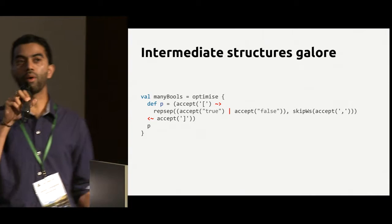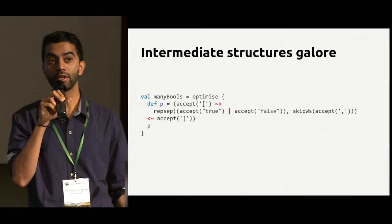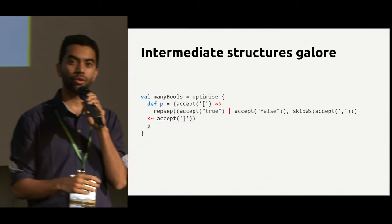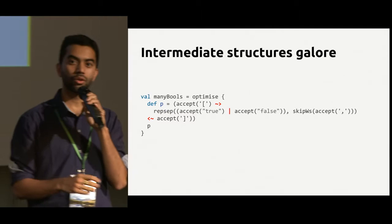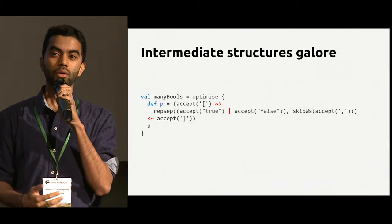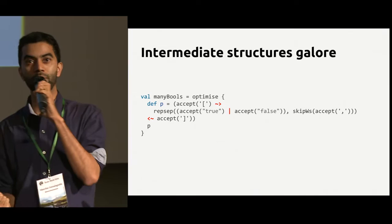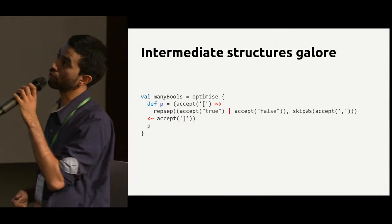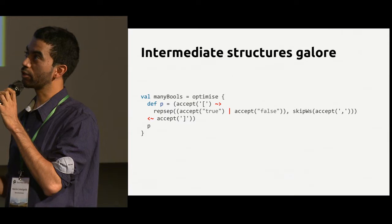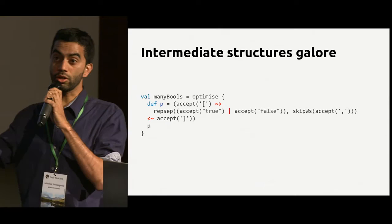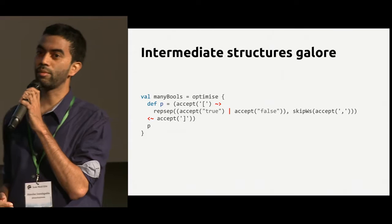Why is parse query faster? The problem is these combinators — when you run them on an input, each participates in creating intermediate data structures all over the place. A parser is a function from inputs to parse result, so every time you parse an element you create an instance of parse result, whether success or failure. Success and failure are just boxes — they don't need to exist for the logic itself. You have similar issues with repetition parsers. You really want to avoid creating all these intermediate objects.